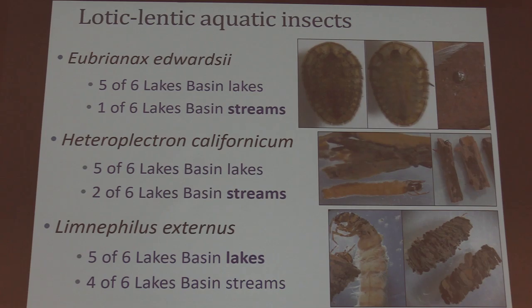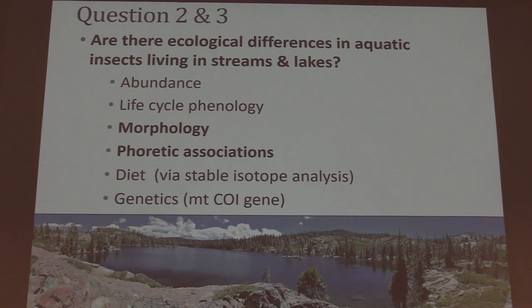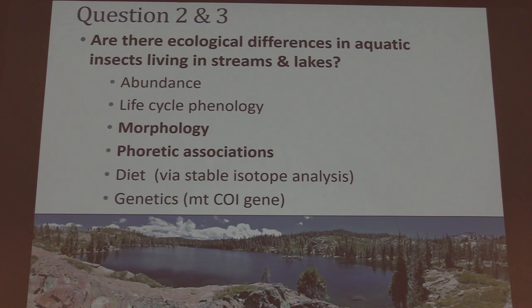That brings me to my next question: they're in both habitats, but what are the ecological differences affecting the insects living in both lakes and streams? To address this, I looked at their abundance, life cycle phenology, morphology, and phoretic associations — phoretic meaning an association between two organisms where one travels on the body of another without necessarily being a parasite. I also looked at diet and genetics using mitochondrial DNA, which had interesting results regarding trophic and population genetic structure. But for today I'll just talk about morphology and phoretic associations.